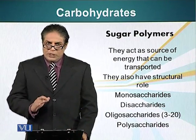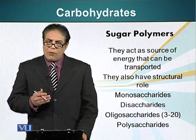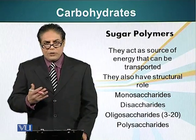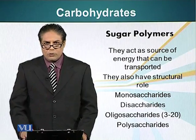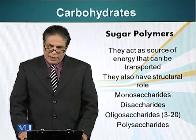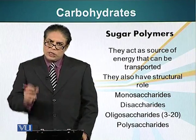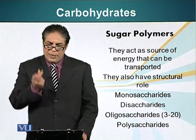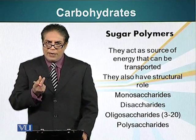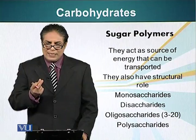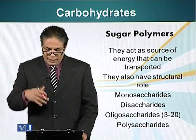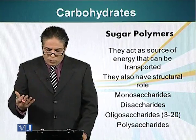Carbohydrates can be classified into four different groups. The first are monosaccharides, in which the monomer — the basic unit of carbohydrates — exists on its own form.